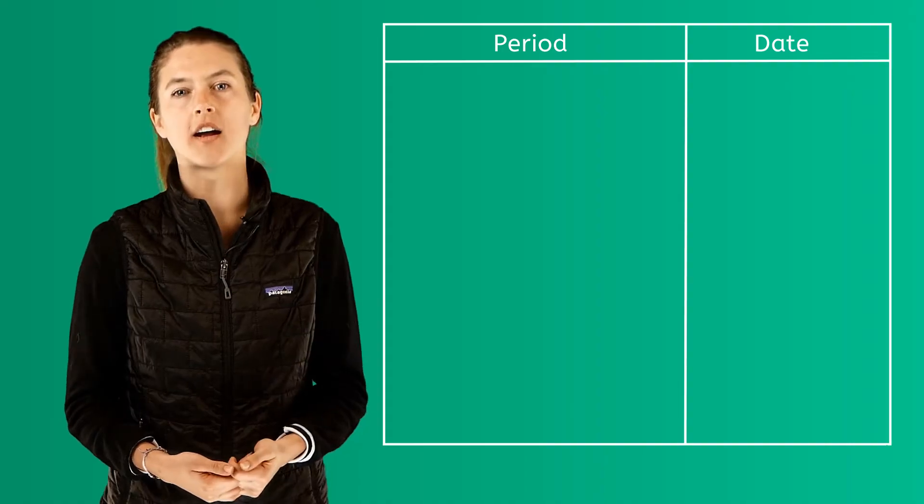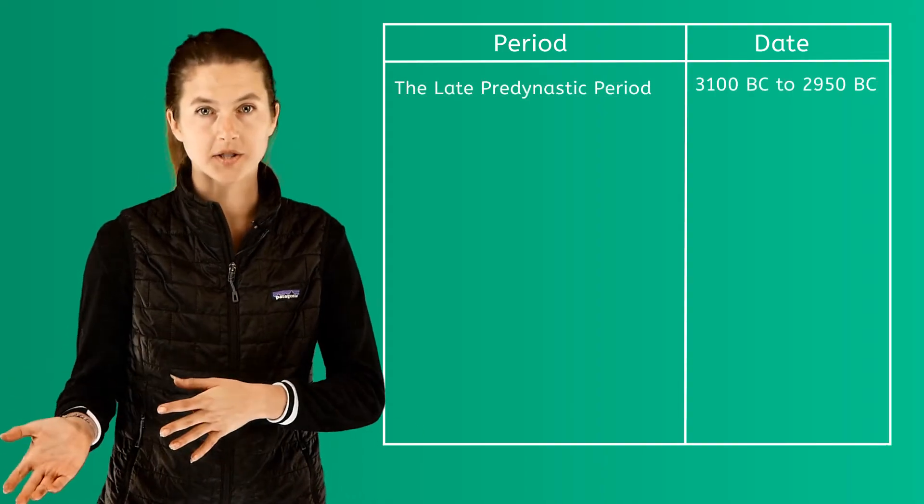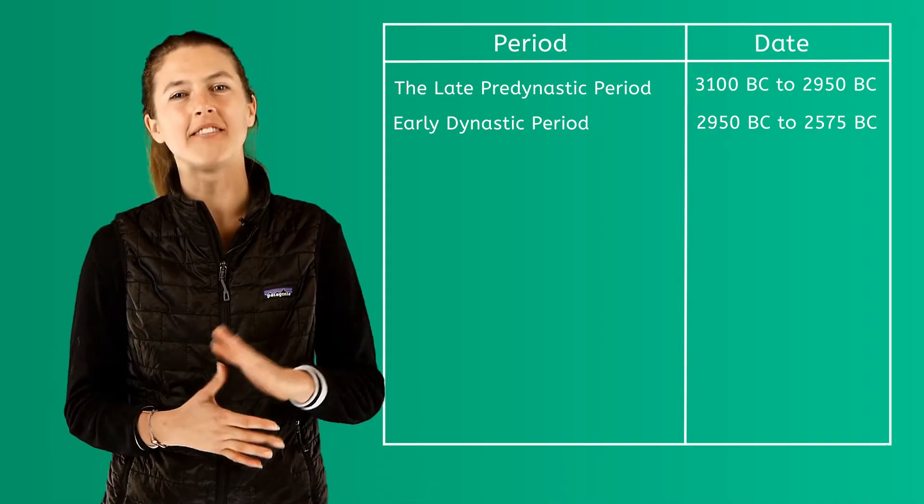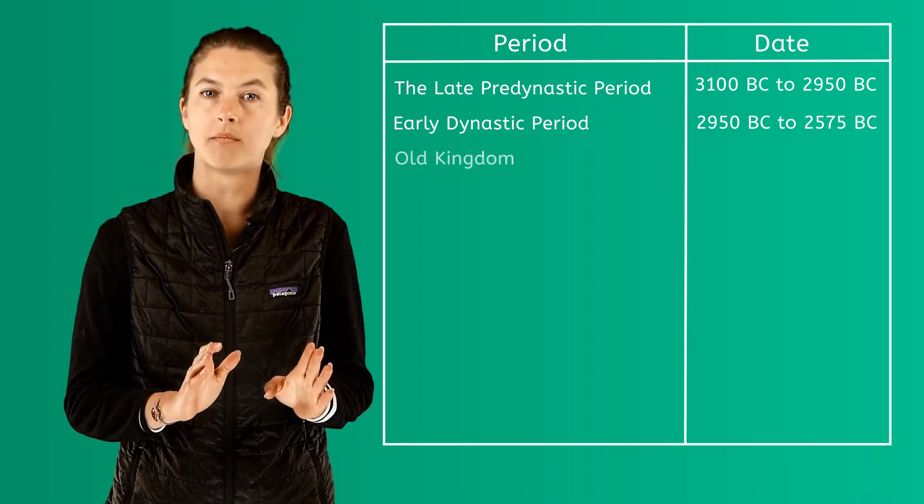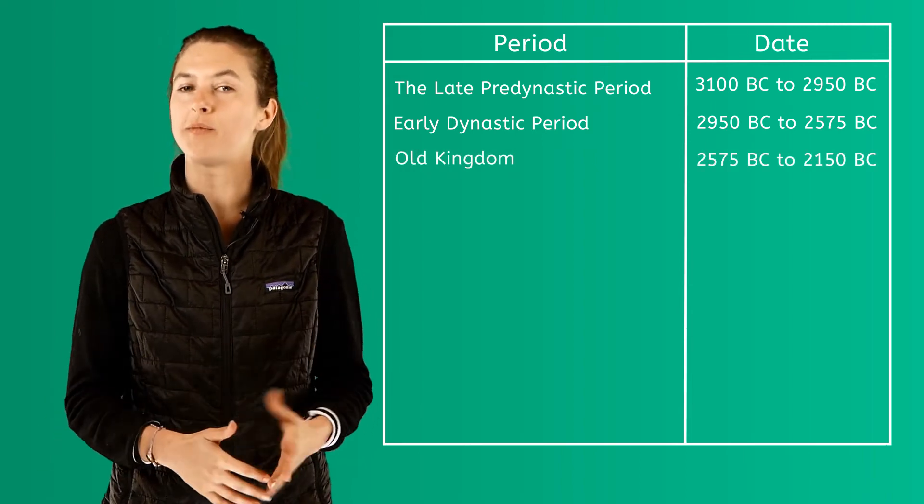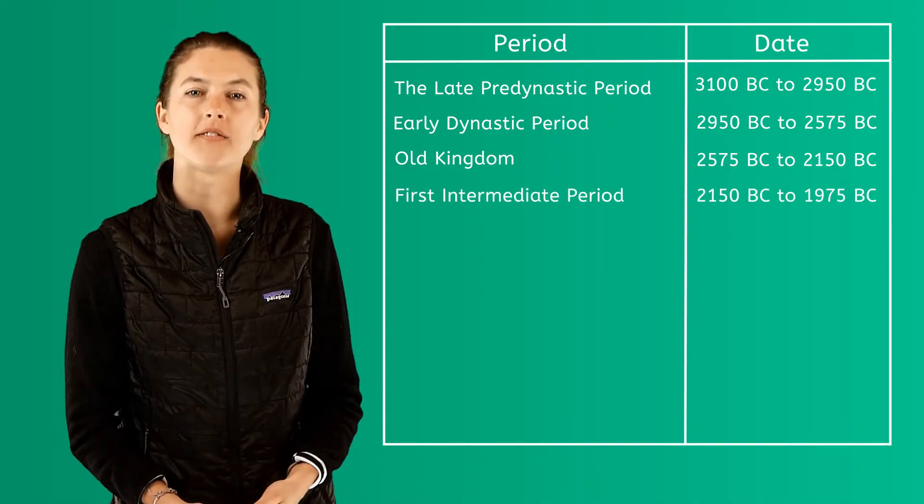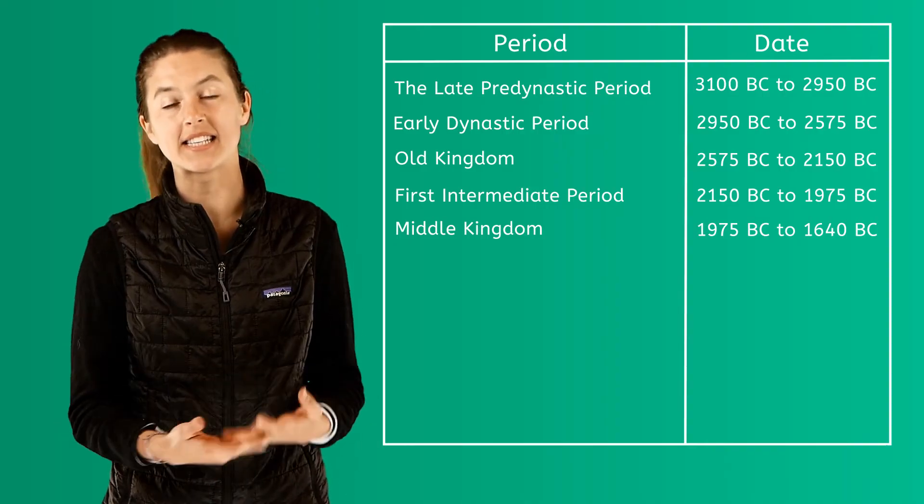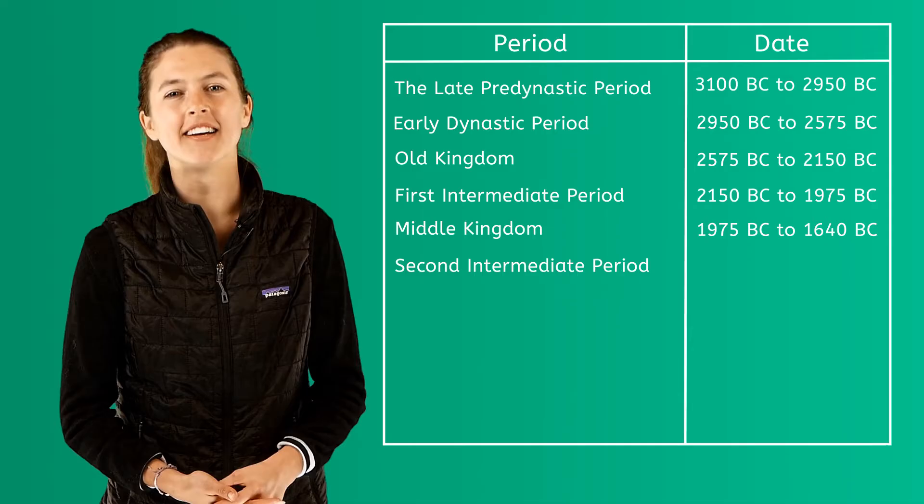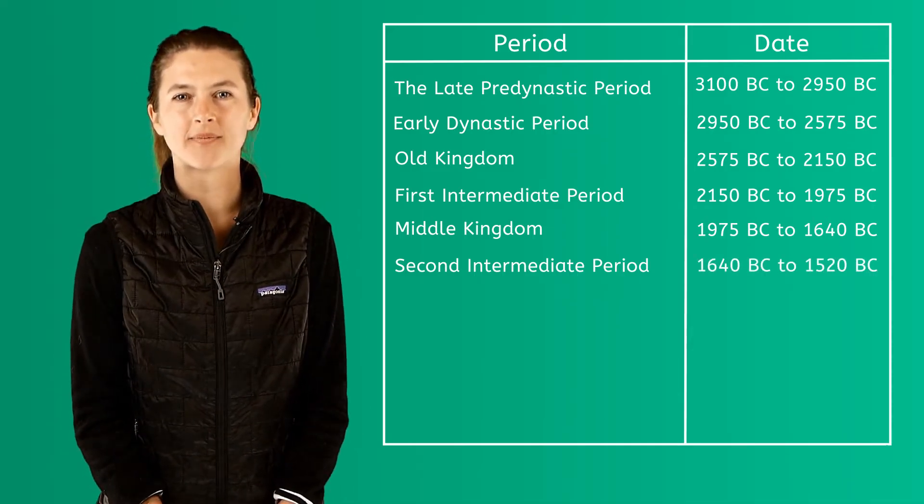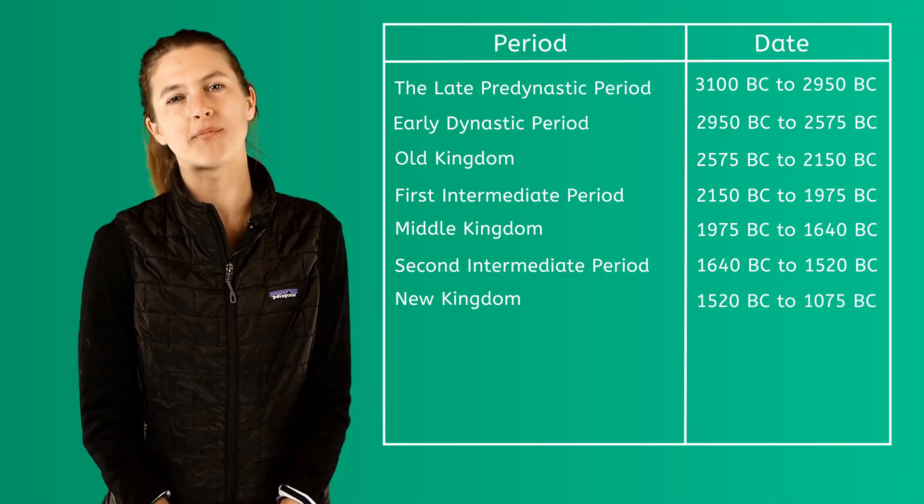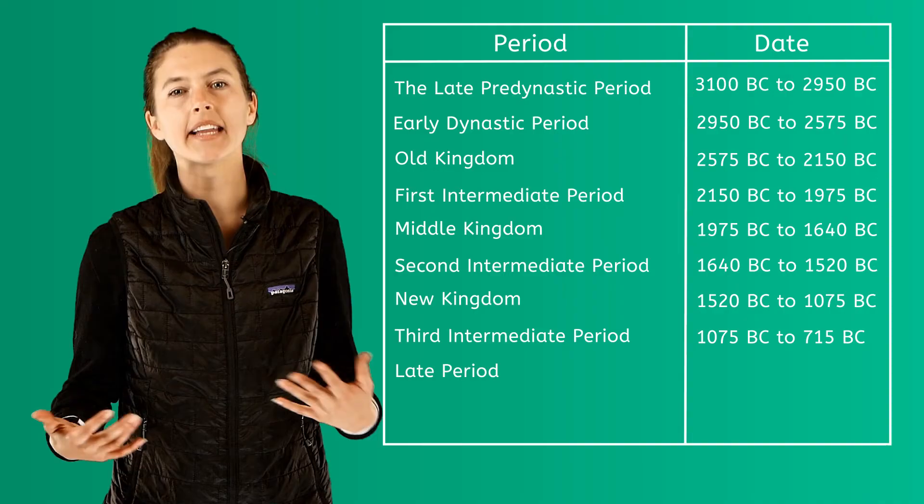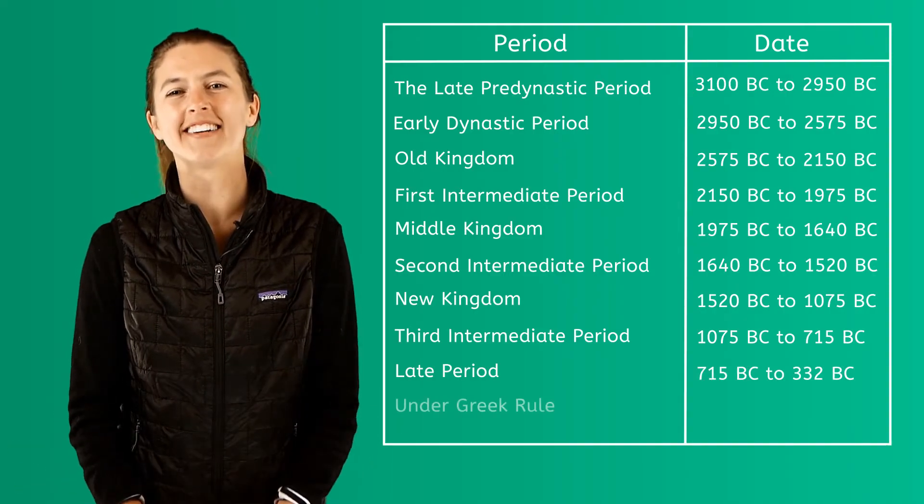These time periods are the Late Predynastic Period from 3100 BC to 2950 BC, the Early Dynastic Period from 2950 BC to 2575 BC, Old Kingdom from 2575 BC to 2150 BC, First Intermediate Period from 2150 BC to 1975 BC, Middle Kingdom from 1975 BC to 1640 BC, Second Intermediate Period from 1640 BC to 1520 BC, New Kingdom from 1520 BC to 1075 BC, Third Intermediate Period from 1075 BC to 715 BC, and Late Period from 715 BC to 332 BC.